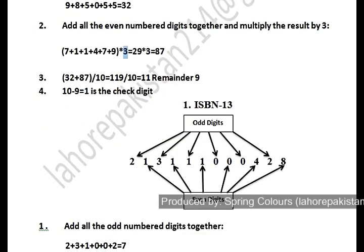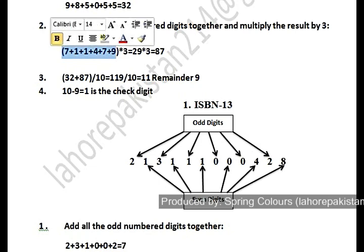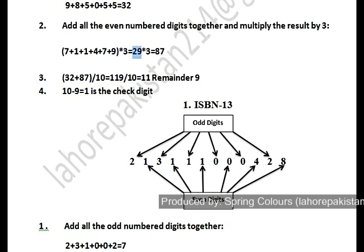To comply with the ISBN-13 formula, we multiply the sum of even-place digits by 3. I have added all the digits at even places to get 29, and multiplied it by 3 to get the final answer for step 2.